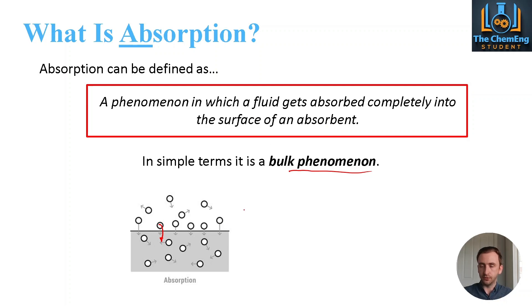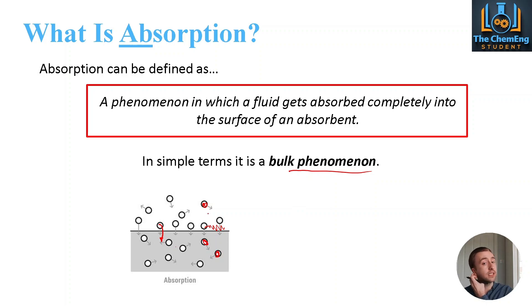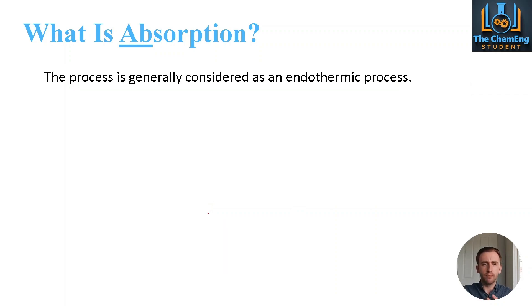Using the example of water: if these individual particles are water molecules and the grey area is a sponge, then you can have the water on the face of the sponge, but you can also have water that enters the sponge. So if you have a system whereby one species can fully diffuse and enter into the other, you have an absorption process. The process is generally considered to be endothermic in that it consumes energy — particularly when we're talking about chemical rather than physical absorption.